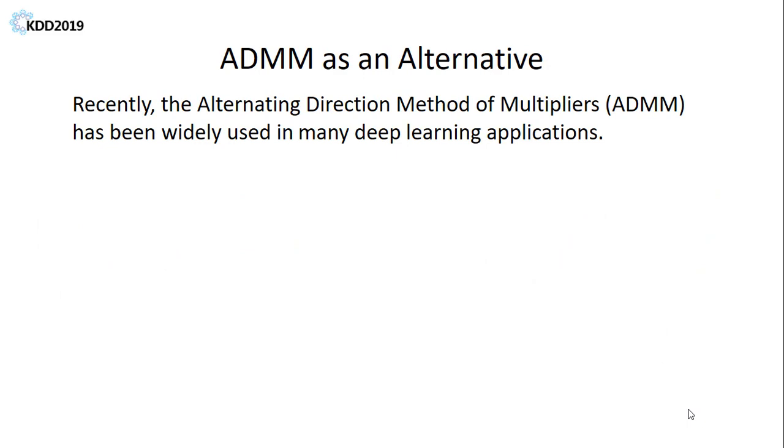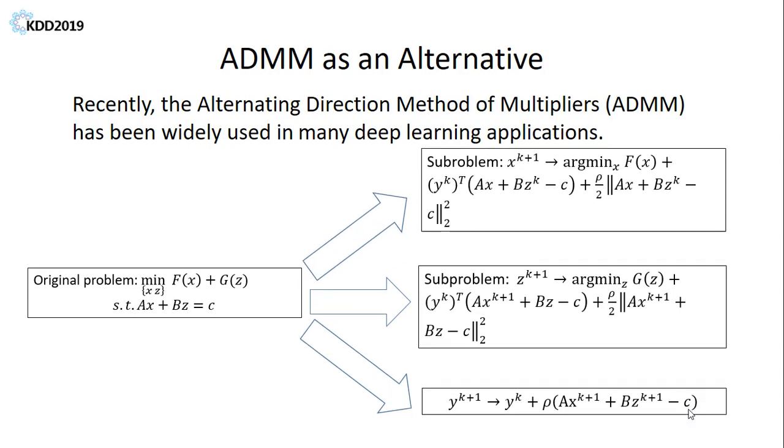Recently, the Alternating Direction Method of Multipliers, or ADMM, optimization framework has been widely applied in many deep learning applications. The strategy of ADMM is to split problems into two or more sub-problems so that each sub-problem is easier to solve.